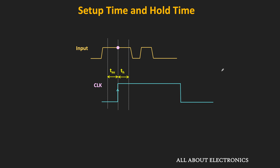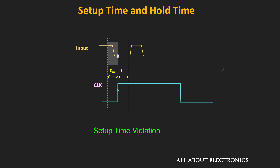On the other hand, if you see this input, it is satisfying both setup time and hold time requirements, and therefore the flip-flop will correctly sample the given input. Now if you see this third case, there is a setup time violation — although the input is satisfying the hold time requirement, it is not fulfilling the setup time requirement. That means the input is changing during the setup time, and therefore we may not get the correct output of the flip-flop.